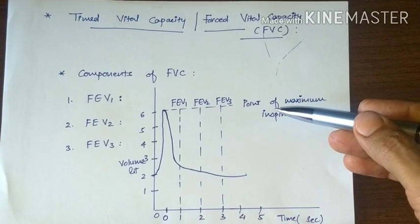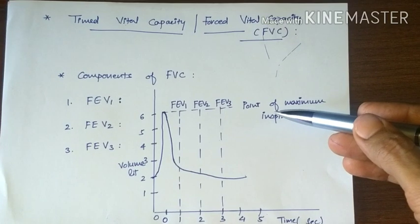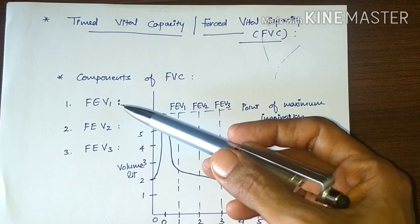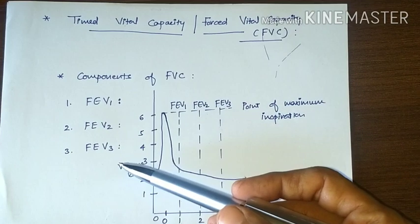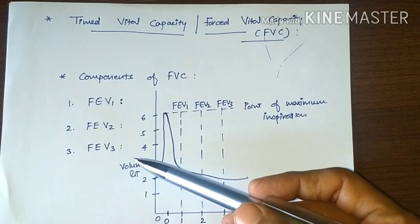Now we will discuss the components of FVC. It has three components: FEV1, FEV2, and FEV3. Now let us discuss what these are.